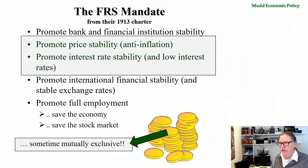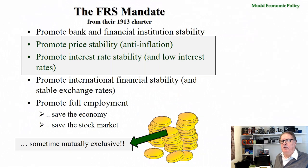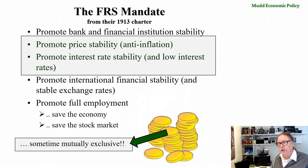If you're trying to promote interest rate stability by keeping interest rates low, episodes from history tell us that if you pursue that for too long a period of time, you're going to have inflation. That's the sense in which the simultaneous successful execution of these two goals is impossible, or nearly so. We'll come back to that at the appropriate point in the lectures.